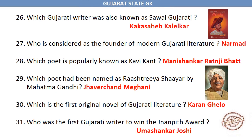Who is considered the founder of modern Gujarati literature? Narmad. Which poet is popularly known as Kavikant? Manishankar Ratnajibhai. Which poet was named Rashtriya Shair by Mahatma Gandhi? Zaverchand Meghani. Which is the first original novel of Gujarati literature? Karan Ghelo.